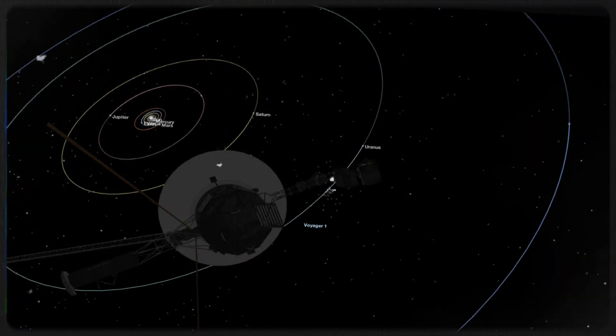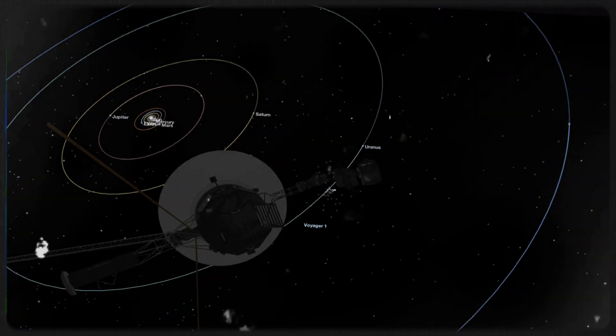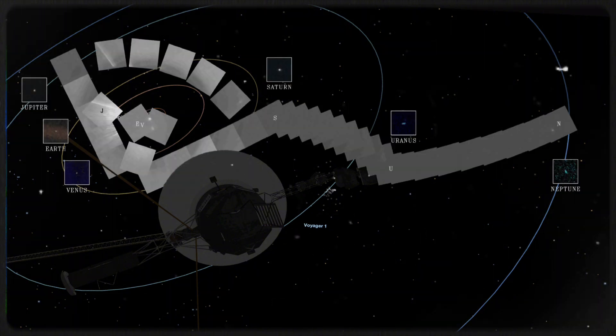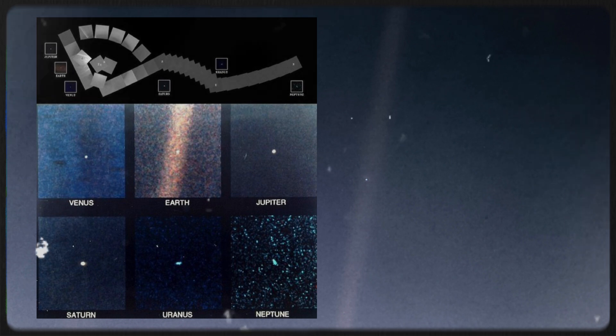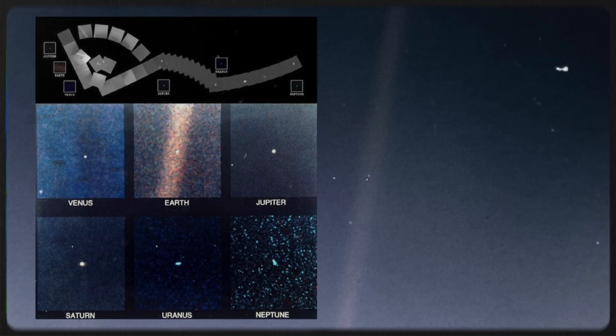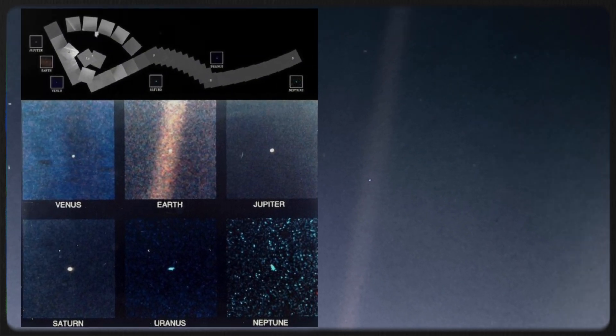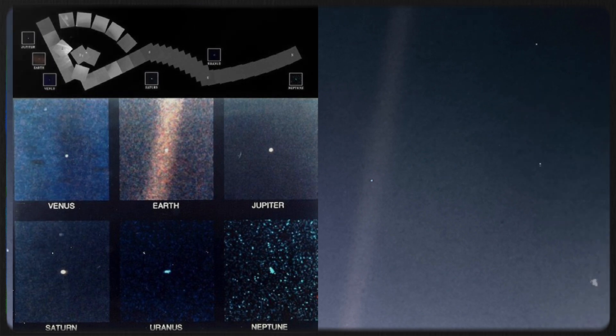As a result, on Valentine's Day in 1990, the probe pointed its cameras back toward the inner solar system and took 60 final pictures. The most captivating of these images, dubbed the pale blue dot by Sagan, shows Earth from 3.8 billion miles away.